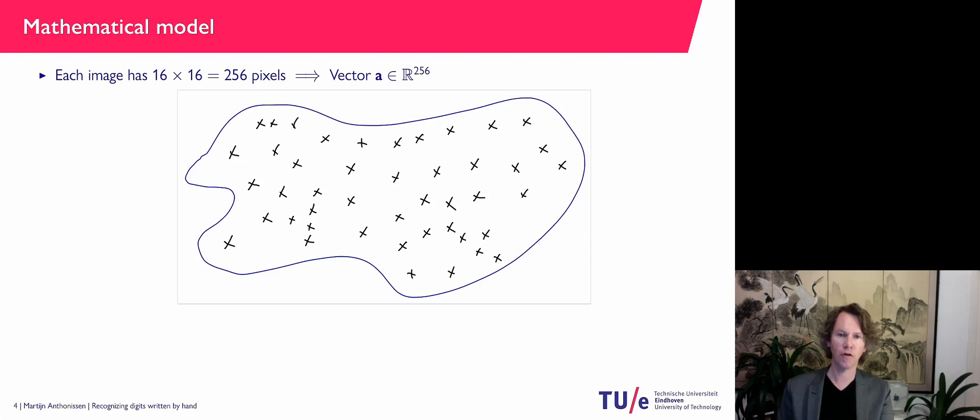And then 0 is going to be black, 255 is white and all the in-between values between 0 and 255 are the grayscales. Then we take those 16 times 16 is 256 pixels. We make one long list of them and mathematically speaking that is a vector.